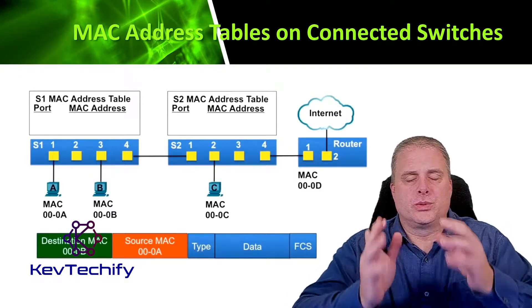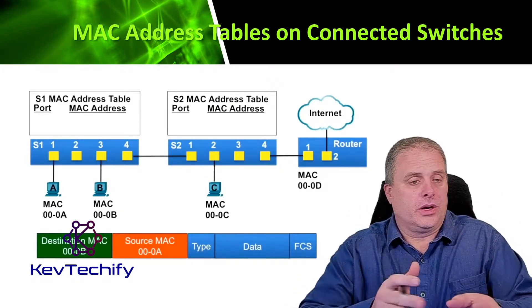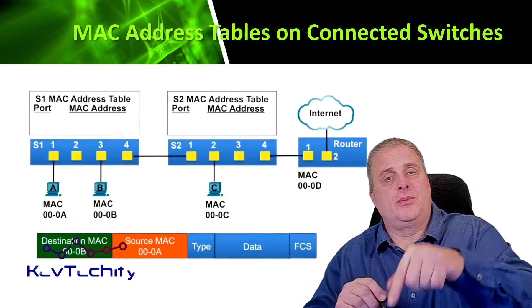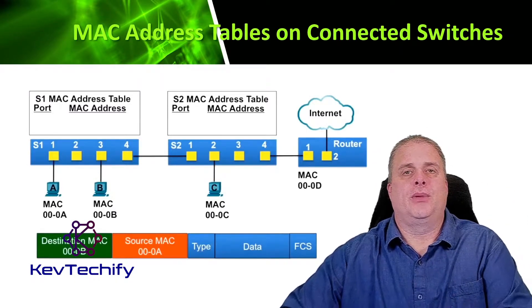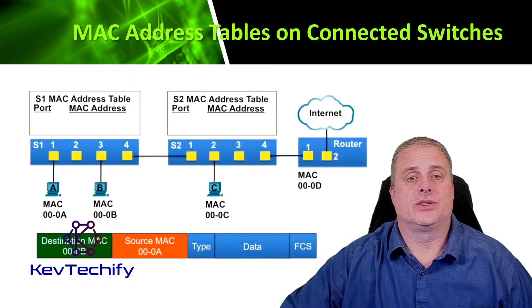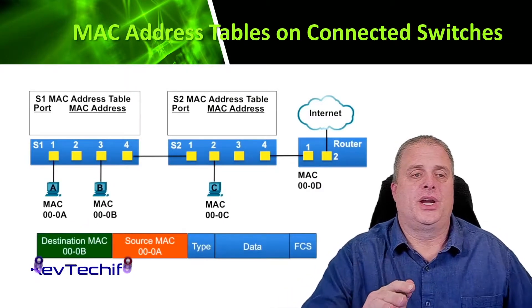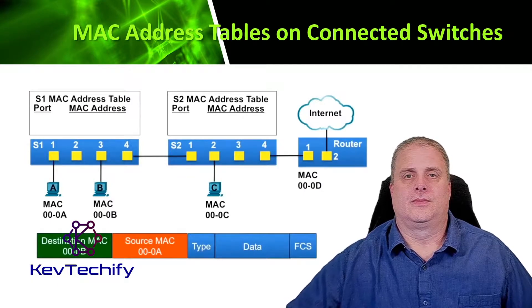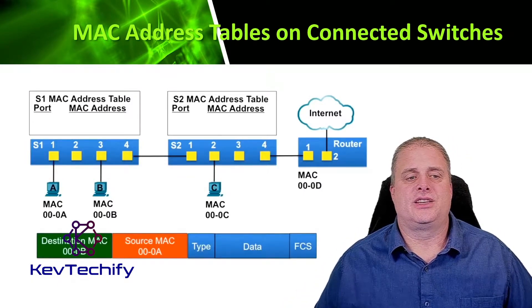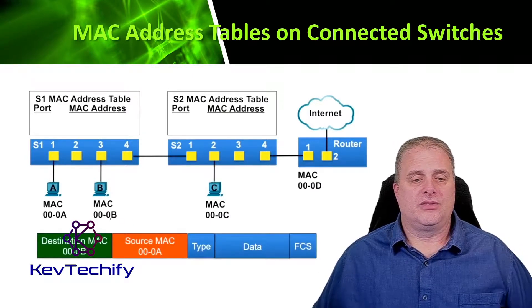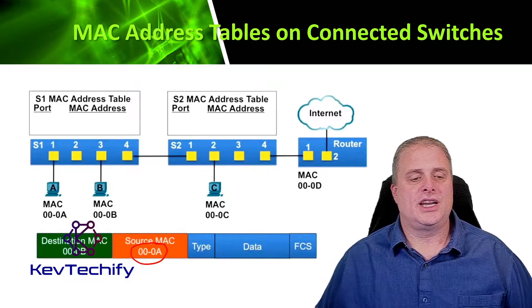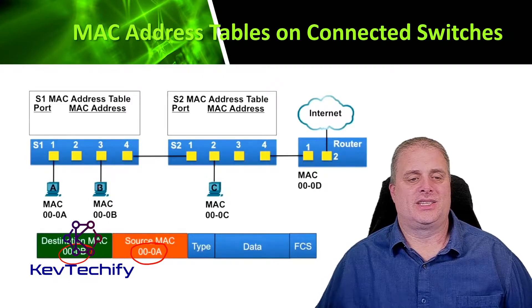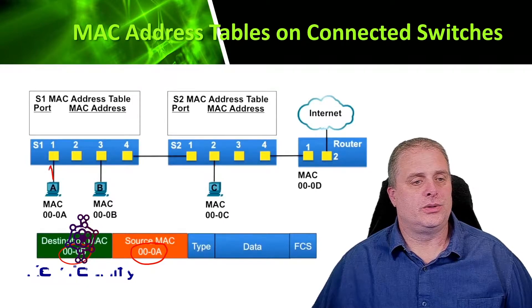Let's take a look at how a switch builds its MAC table. Here we examine where PCA sends a frame to PCB, and then PCB sends that frame back to PCA. We're going to examine how switches S1 and S2 build their MAC address table, and how they forward frames based on that information. To start off with, PCA has an Ethernet frame to send to PCB. The source MAC address of the frame is 00A — that's PCA — and it has a destination MAC address of 00B, which is PCB.